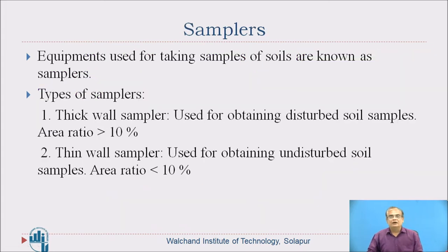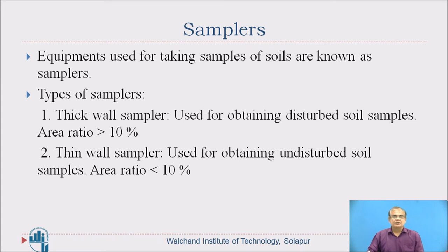Now let us study a little about the samplers used for taking soil samples. Types of samplers: mainly thick and thin wall samplers. Thick wall samplers have an area ratio greater than 10% and are used for obtaining disturbed soil samples. For obtaining undisturbed samples, thin wall samplers with an area ratio less than 10% are used.